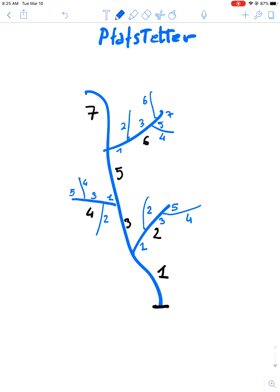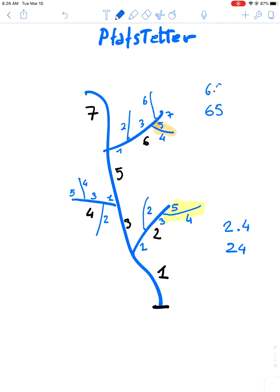And this is the number 7 and this is the number 6. So which is the number of this tributary here? The number of this tributary here is 2, because of the big 2 point 4 or simply 24, which is the number of this tributary here. This is the number six five or six point five, depending on how you want to characterize it.